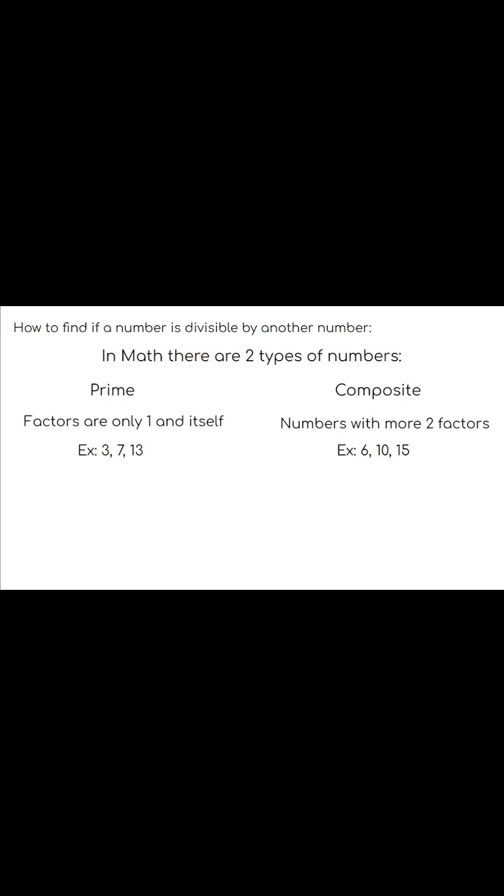Composite numbers can be prime factored, which means that they can take composite numbers and then divide it into prime numbers. For example, we have 15. 15 can be prime factorized into 3 and 5. And another way of thinking of it is 3 times 5 equals 15. So what do we do with that information?